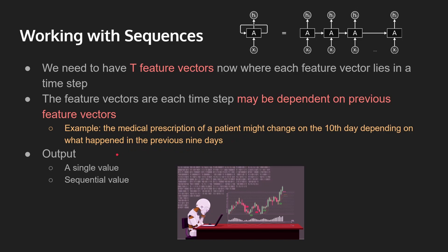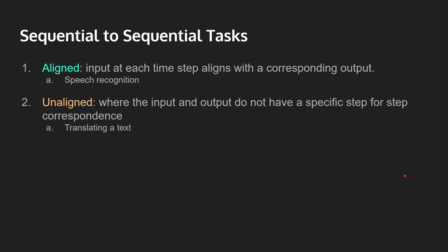The output for a recurrent neural network could be a single value or a sequential output. For example, if you have a sequence of stock prices and you only want to return buy or sell, that will be a single value. Or it could be a sequence of values, such as when you want to caption what is going on in an image or video.